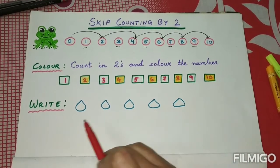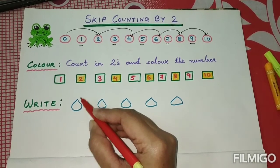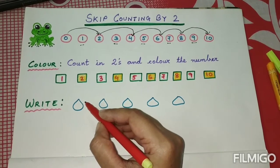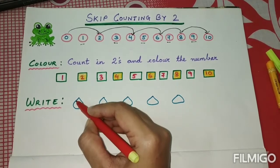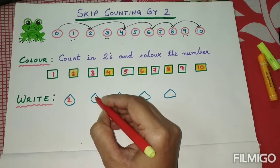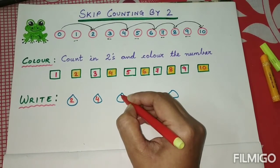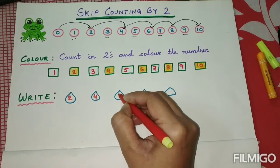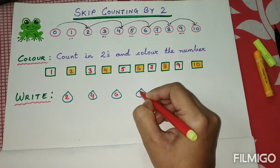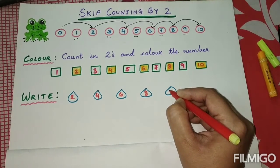Now in this next column we will write the numbers which we have colored. The first number we will write is two, the second number is four, then we will write six, then eight, and the last number we are going to write is ten.